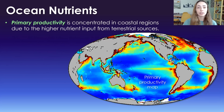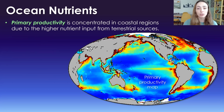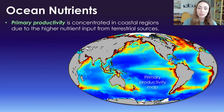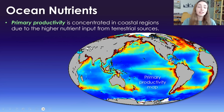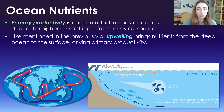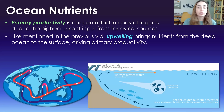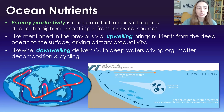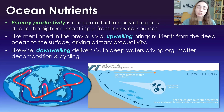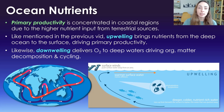Primary productivity is very variable depending on where in the ocean we're looking. It's concentrated in coastal regions due to much higher nutrient input from terrestrial sources. As mentioned in the previous video about ocean circulation, upwelling is a vertical mixing process that brings nutrients from deep water to the ocean's surface, driving primary productivity. Likewise, downwelling — the sinking of surface waters to deep waters — delivers oxygen to the deep waters, driving organic matter decomposition and cycling.